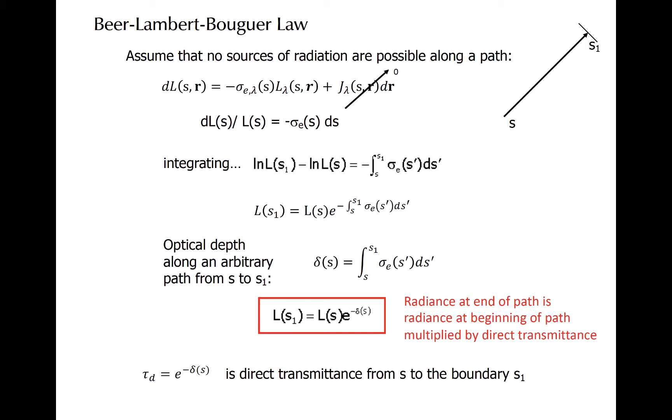Let's begin to consider some idealized cases. First, let's assume that no sources of radiation exist along the path. That means that j goes to zero.